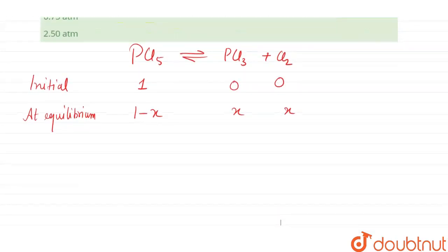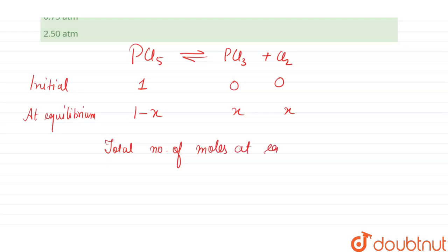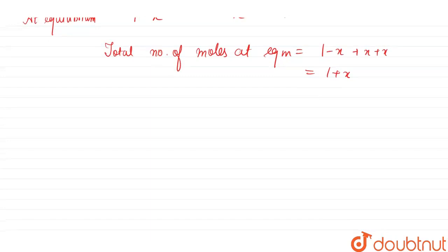From here we can find the total number of moles. Total moles at equilibrium equals (1 - x) + x + x, which comes out as (1 + x). Now we have to find the pressure, and for that we will find Kp.